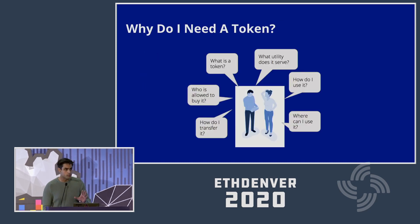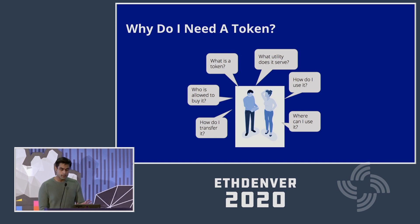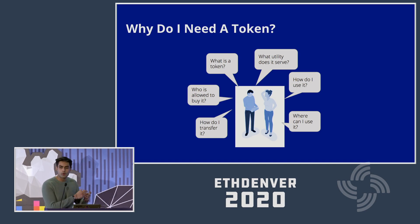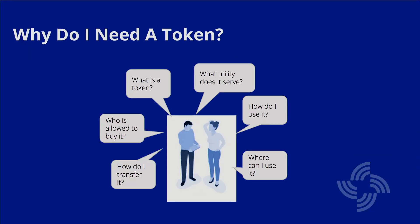Secondly, there's less of a focus on scams and Ponzis — mostly. I'm not going to mention any specific names, but I heard that IOTA has had a pretty tough 24 hours. And the final thing is that better questions are being asked in general. Questions like: I have a token, but what utility does it serve? How do I use it? Where can I use it? Who's allowed to buy it? How is it distributed?